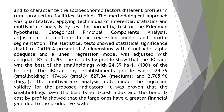CATPCA presented two dimensions with Cronbach's alpha adequate, and a linear regression model was adjusted with adequate R² of 0.90. The results by profile show that the Ibican was the best of the small holdings, with 24.39 hectares and minus 100% of the lessors.